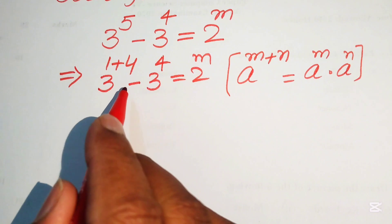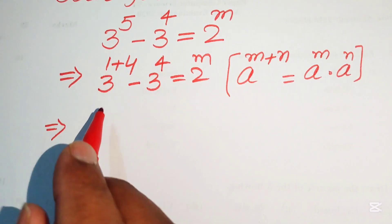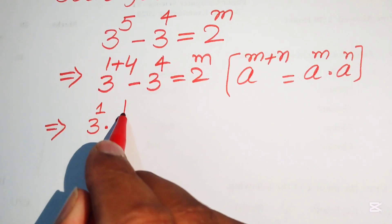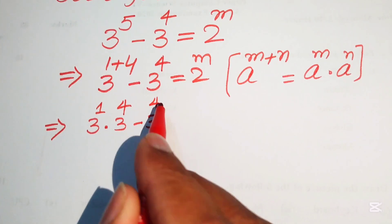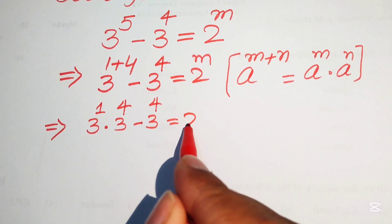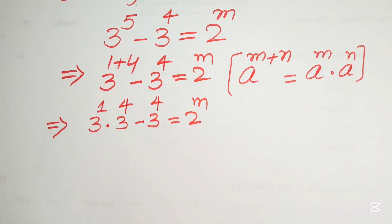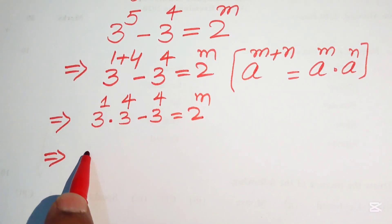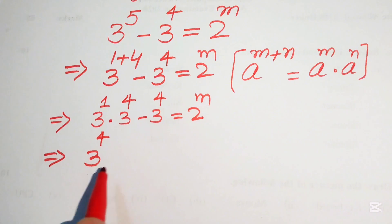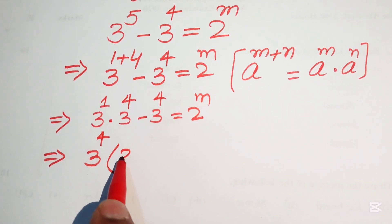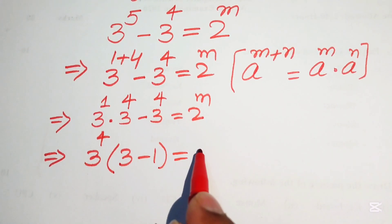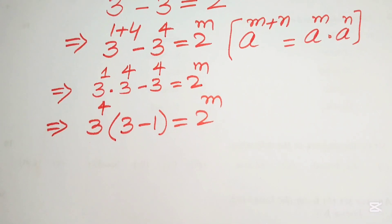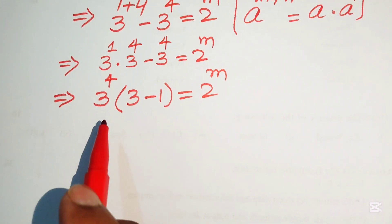Applying this exponential law on the left-hand side, we break the exponent and write it as 3^1 multiplied by 3^4 minus 3^4, equals 2^m. Now we can see that 3^4 is a common term, so we factor it out. The remaining terms give us 3^4 times (3 minus 1) equals 2^m.